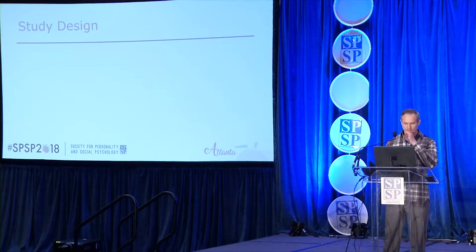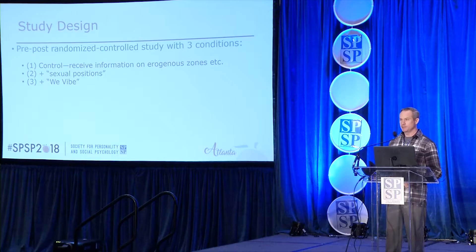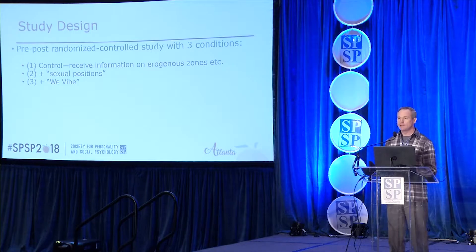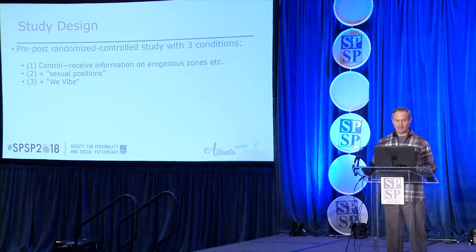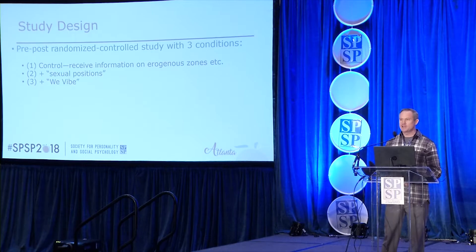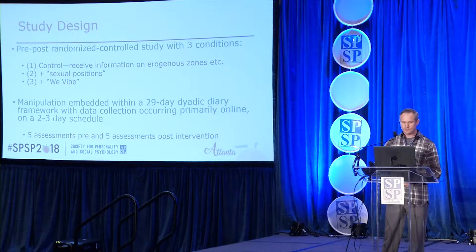Study design: we had a pre-post randomized control study with three conditions. One condition involved couples coming in to learn information about erogenous zones and sexual pleasure—where people like to be touched most. A second condition had all that plus a booklet called a playbook containing various sexual positions. And a third condition had all of that plus what's called the WeVibe.